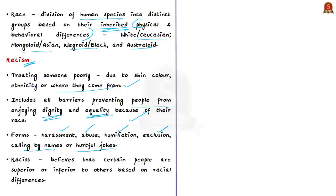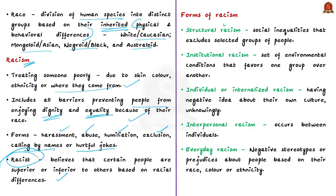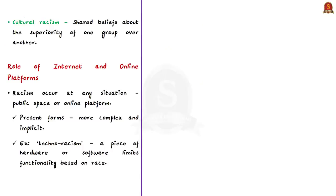A person who believes certain people are superior or inferior to others based on racial differences is called a racist. The major forms of racism include: structural racism — social inequalities that exclude selected groups; institutional racism — environmental conditions that favor one group over another; individual or internalized racism — unknowingly having a negative idea about one's own culture; interpersonal racism — racism that occurs between individuals; everyday racism — negative stereotypes based on race, color, and ethnicity; and cultural racism — shared beliefs about the superiority of one group over another.